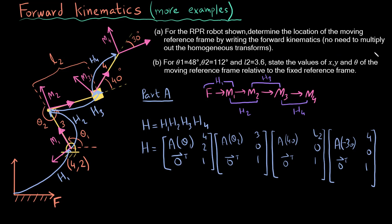Since the question asks us not to multiply it out, we leave it as is. This completes Part 1.